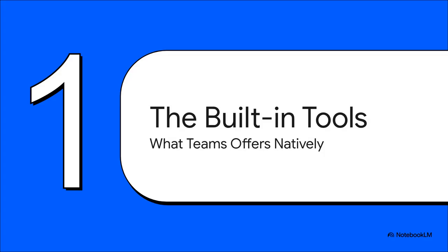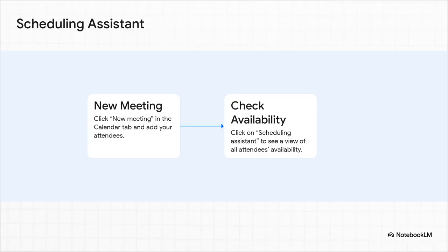So first things first, let's look at what Microsoft Teams gives you right out of the box. There are two main tools designed to help you with scheduling, and you've really got to understand them before you can master your calendar game. The first one is the scheduling assistant. When you're setting up a new meeting, you'll see this tab — click on it and you get a timeline view showing when your colleagues are free or busy.